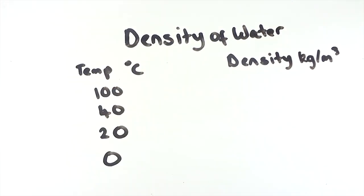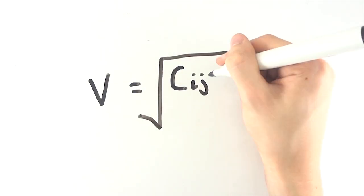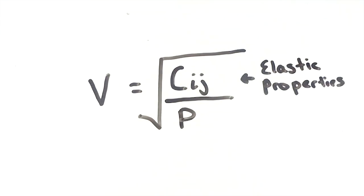The speed of sound in a medium also varies with temperature, as the change in temperature affects the density of the medium. There are two properties which affect the velocity of a sound wave: elastic properties and density, with this relationship being described by this equation.